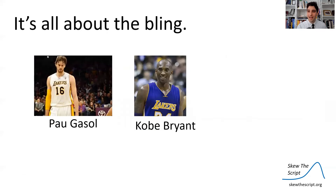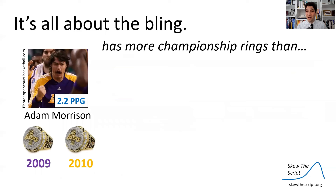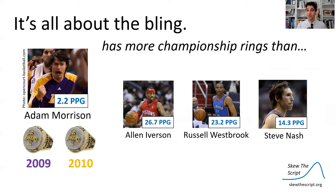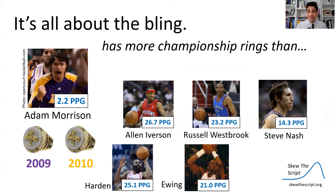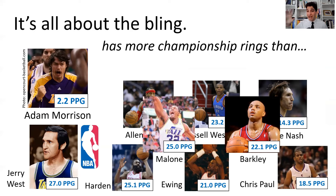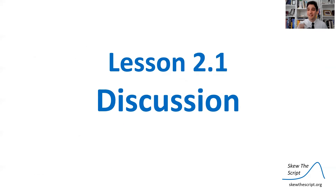One thing to consider: in the NBA you can score a lot of points, but at the end of the day it's about championships. In 2009, the Lakers with Kobe and Pau Gasol won a championship, and again in 2010. Adam Morrison was on both those teams — mostly on the bench — so he has two championship rings. That means Adam Morrison, with his 2.2 points per game, has more rings than Allen Iverson, Russell Westbrook, Steve Nash, James Harden, Patrick Ewing, Chris Paul, Charles Barkley, Karl Malone, and Jerry West — whose silhouette is literally the NBA logo — combined.